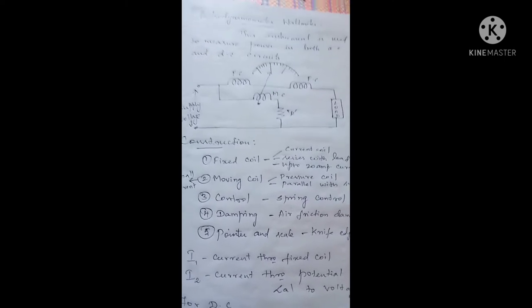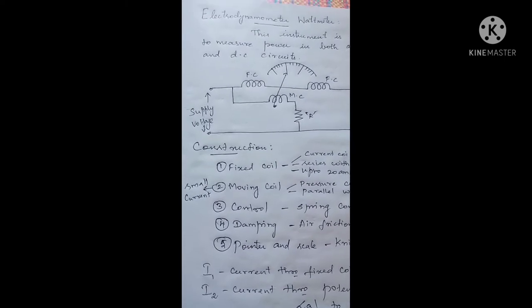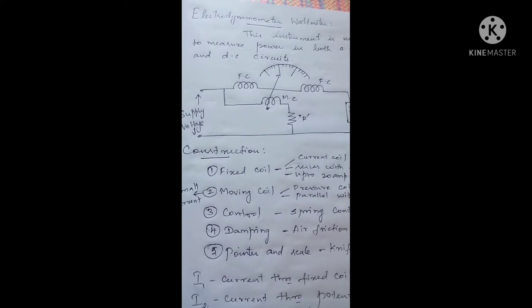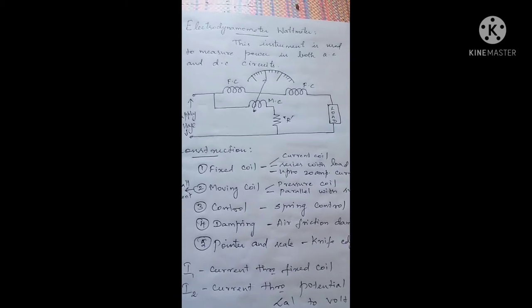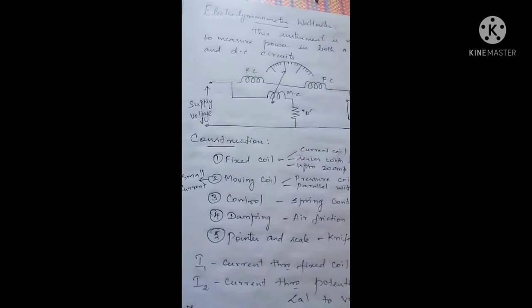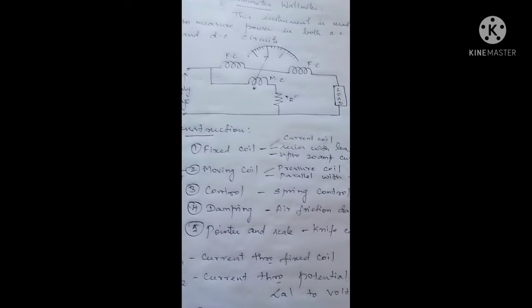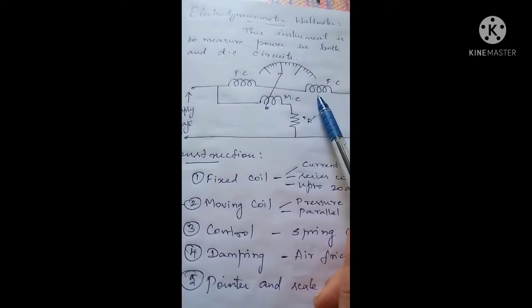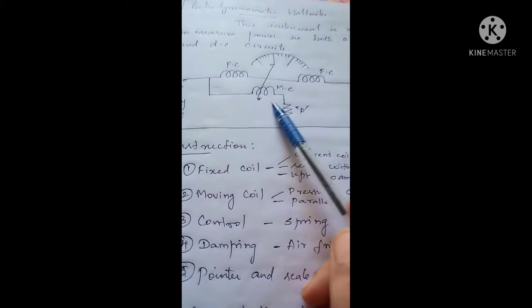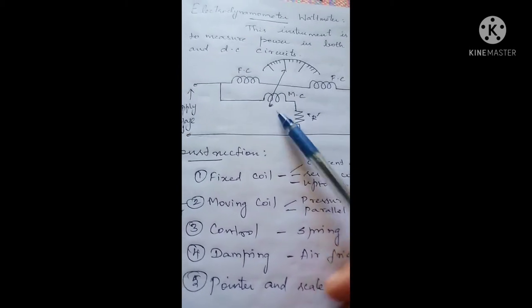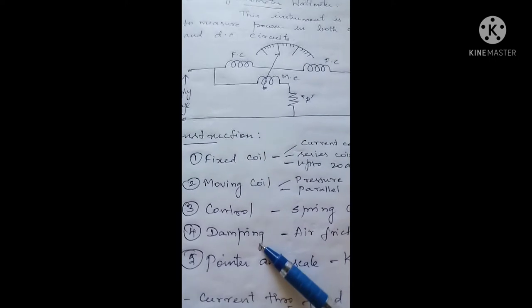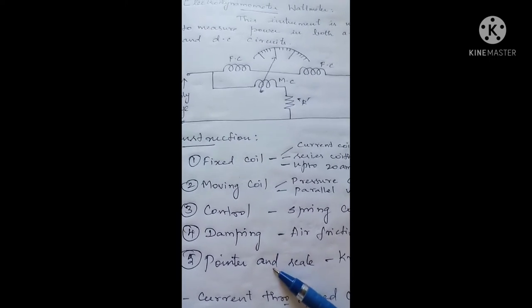These instruments operate based on the electrodynamometer principle. This is the arrangement of an electrodynamometer type wattmeter, and this instrument operates based on the principle of Faraday's laws of electromagnetic induction. This instrument consists of five main parts: the fixed coil arrangement, the moving coil arrangement, a control arrangement, a damping arrangement, and a pointer and scale arrangement.